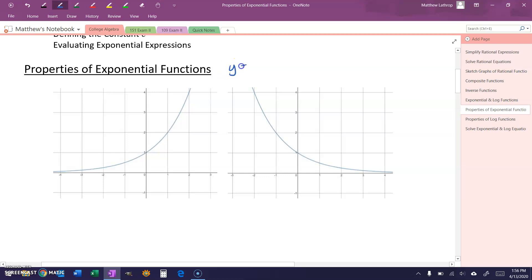Below we have the graph of two functions of the form y equals a to the x power, so two exponential functions, where a has to be greater than 0 and a cannot be equal to 1. On the left, what we have is the case where a value for a is something larger than 1, and on the right we have the case where our value for a is between 0 and 1.